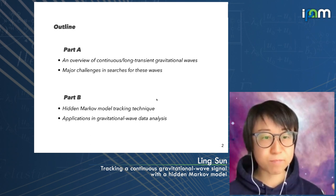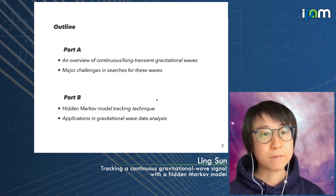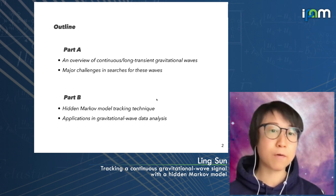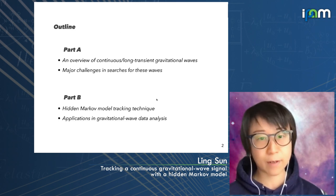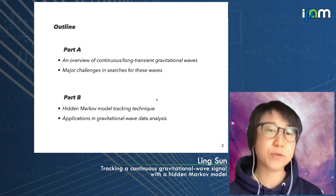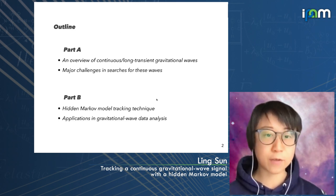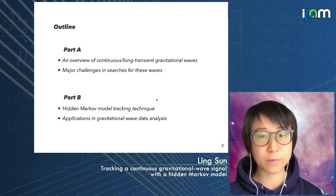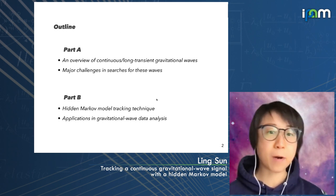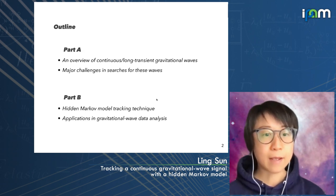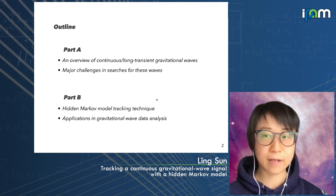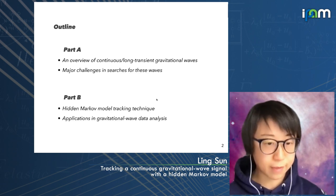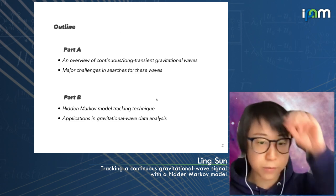The talk will be mainly divided into two parts. For the first half, I'll give an overview of continuous gravitational wave sources and long-transient gravitational waves, why we are interested in them, and the major challenges we are facing when searching for these waves. Then for the second part, I mainly focus on signal processing and the Hidden Markov Model tracking technique — how that works and how we apply that to gravitational wave analysis.